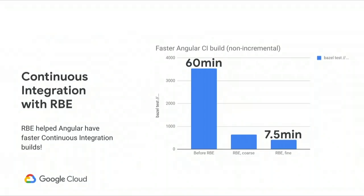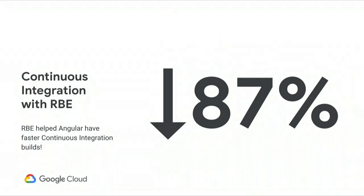This is what our continuous integration time looks like. You can imagine a developer on the Angular team having to wait an hour for all of the tests to run, then finding out something was broken — going through this round trip many times significantly hurt our development velocity. The numbers I'm showing here are non-incremental, this is the uncached build. That's a detail related to the fact that we get contributions from the open source community, and using a remote cache has some security risks for us. This graph shows 60 minutes was before we enabled remote build execution — the dash dash config equals remote that Dana showed. Today, a typical round trip time is seven and a half minutes to run all of the tests. This is a decrease of 87% on our test time, and it has made a really big difference to the Angular team.